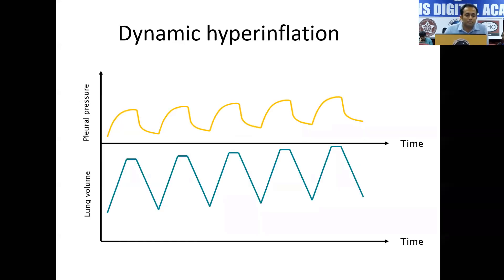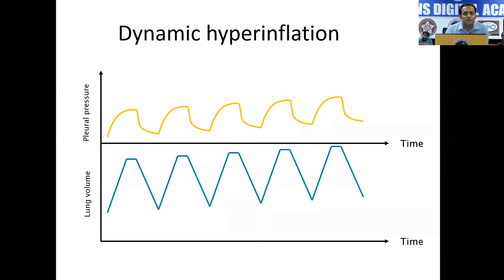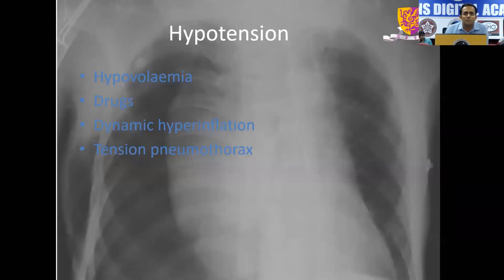This is how the pressure as well as volume curve looks like. If you look at the lower half of the diagram, there is a gradual accumulation in volume — the baseline is actually going up. That means there is bronchoconstriction or an extremely high respiratory rate with insufficient time for exhalation, which leads to air trapping and low blood pressure. Dynamic hyperinflation is something we need to understand because many times we end up ventilating these patients at a very high respiratory rate as per ARDS protocol.